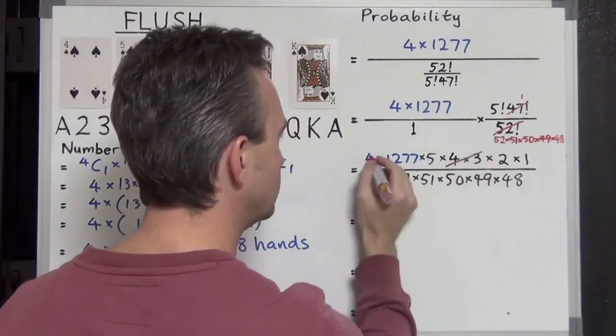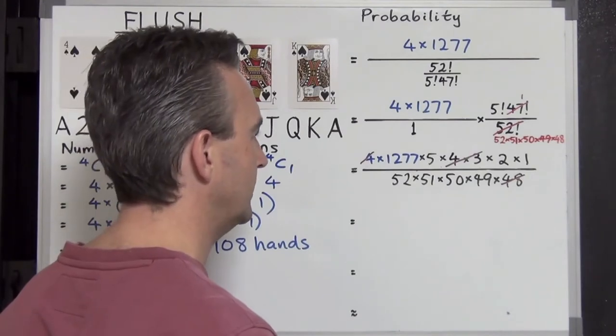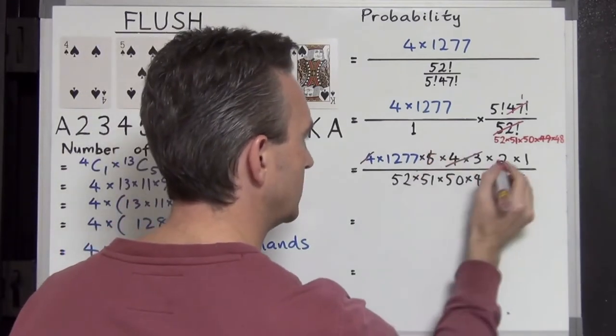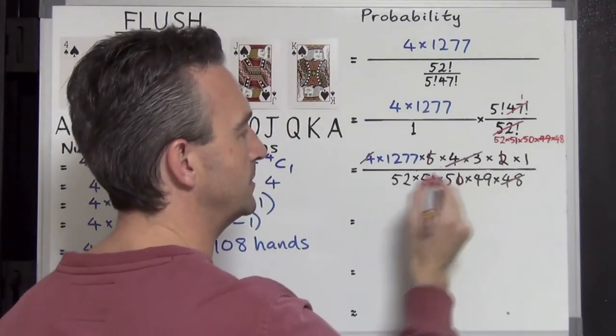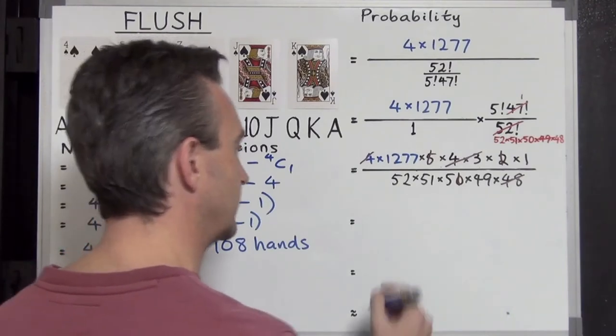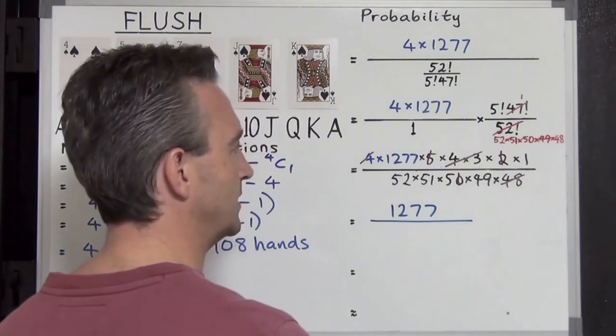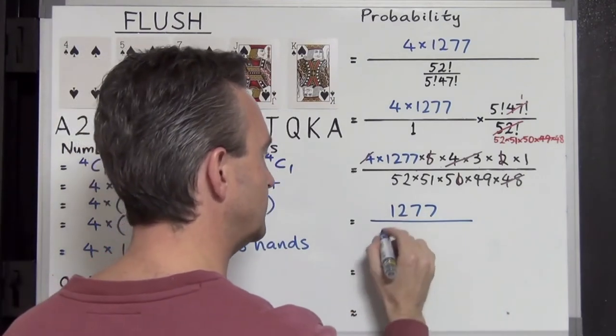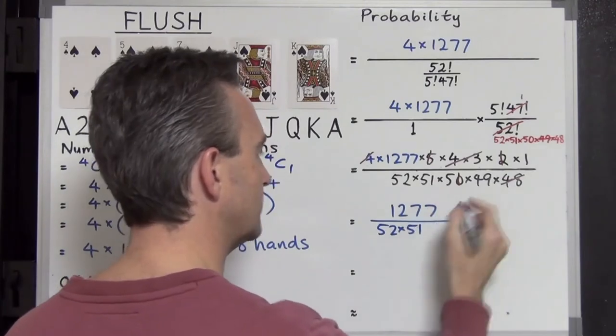4, 3 is 12. 12 times 4 will cancel with a 48 on the bottom. And we also have 5 times 2, which is 10, canceling the 10 down in the bottom so that 50 becomes a 5. Always like doing that one. Since 1,277 is prime, that's all that's going to cancel. So simplified, it's going to be 1,277 over 52 times 51 times 5 times 49.